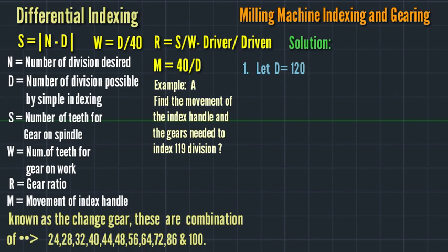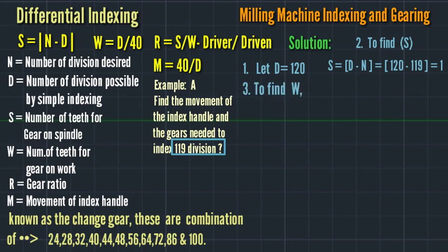The division is 119. We can assume 120, close to 119, as our number of divisions possible. Let D equal 120. To find S, S equals N minus D, equals 120 minus 119, so the gear on spindle is S equals 1. To find W, D divided by 40, so 120 divided by 40, that is 3.